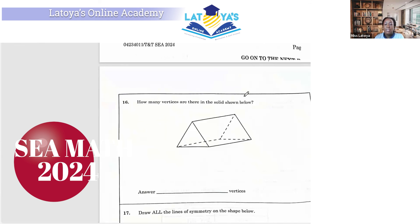The vertices in the solid shown below. So the shape was drawn. This is a triangular prism, and we can check the vertices. 1, 2, 3, 4, 5, 6. So the answer is 6.